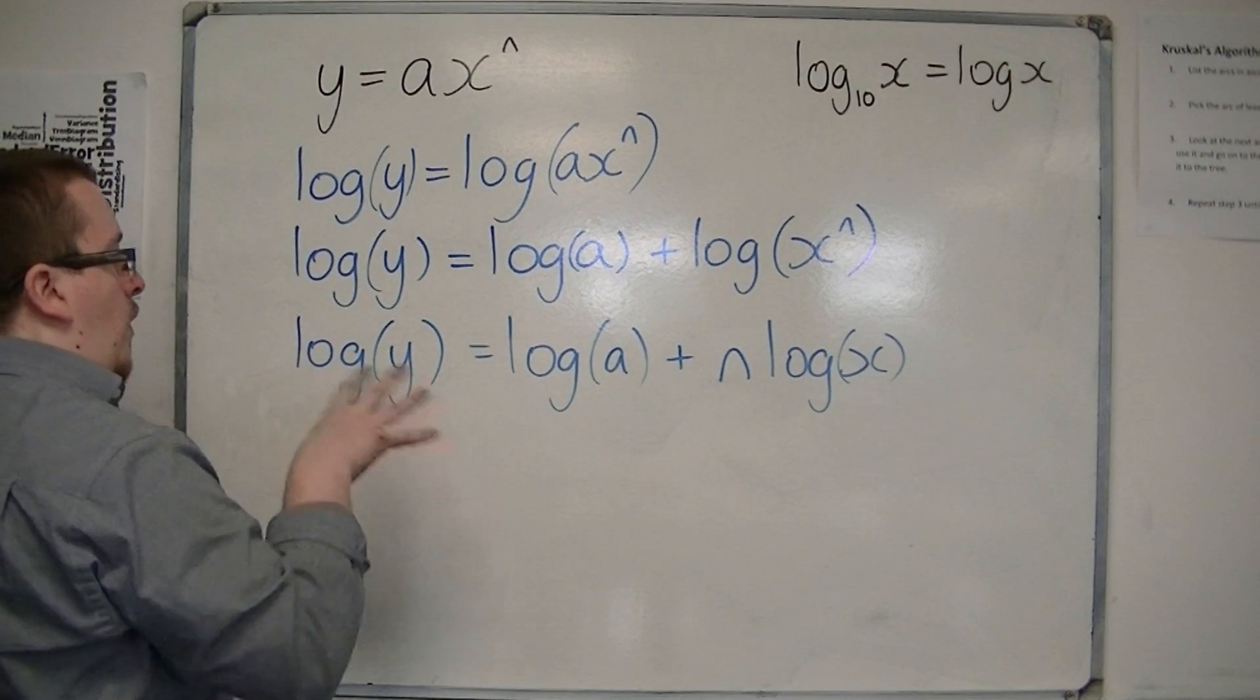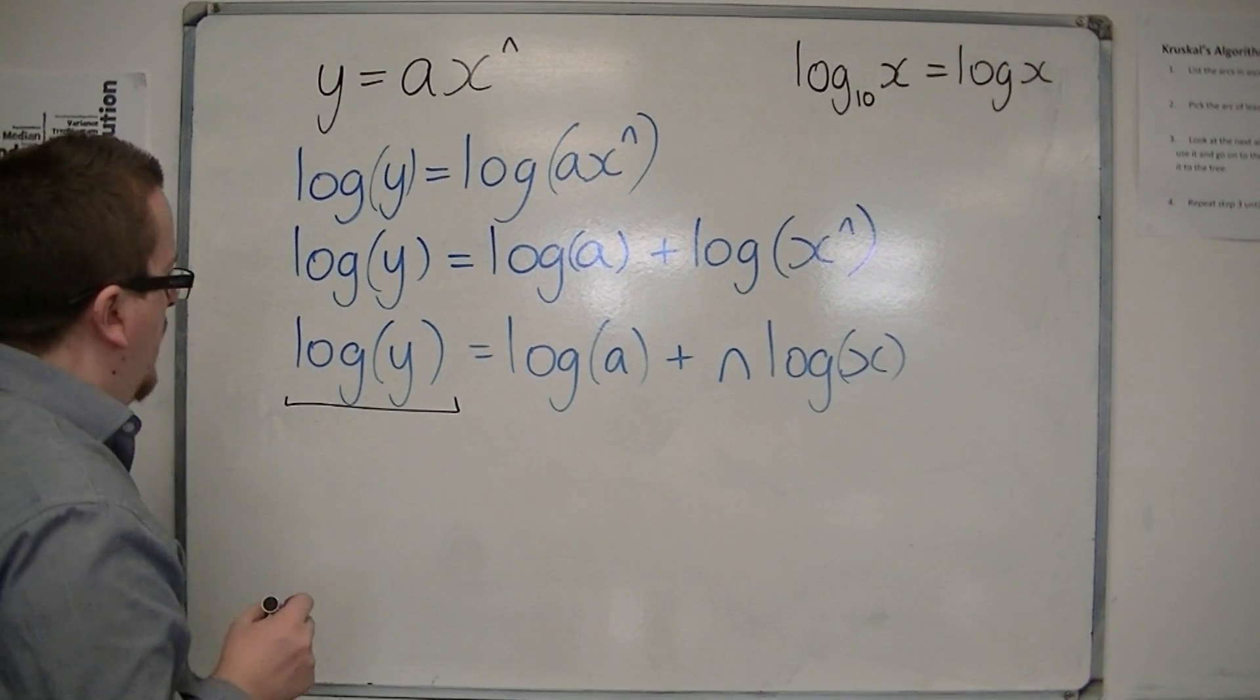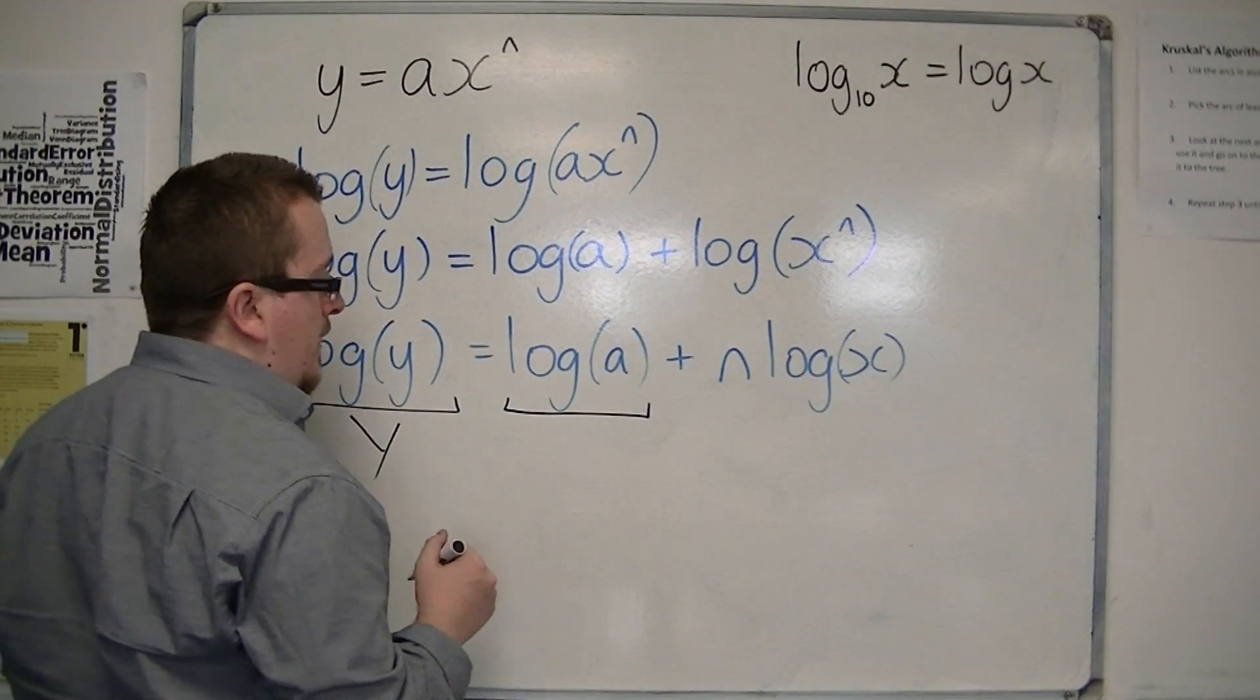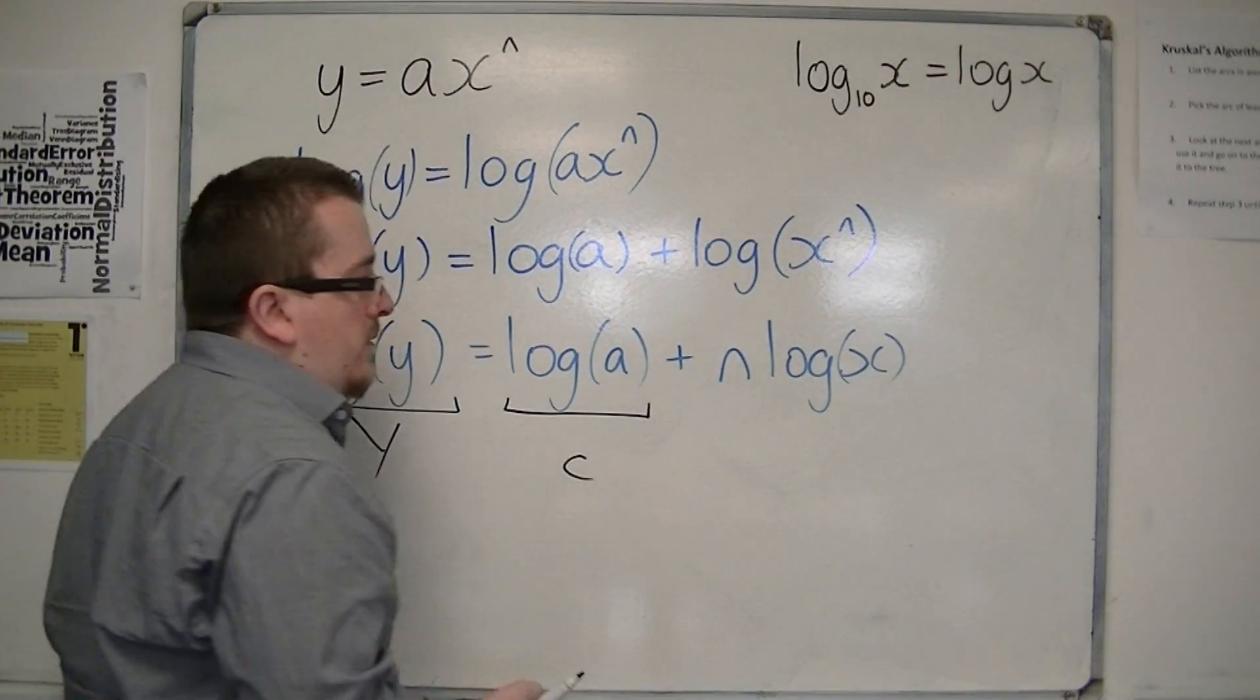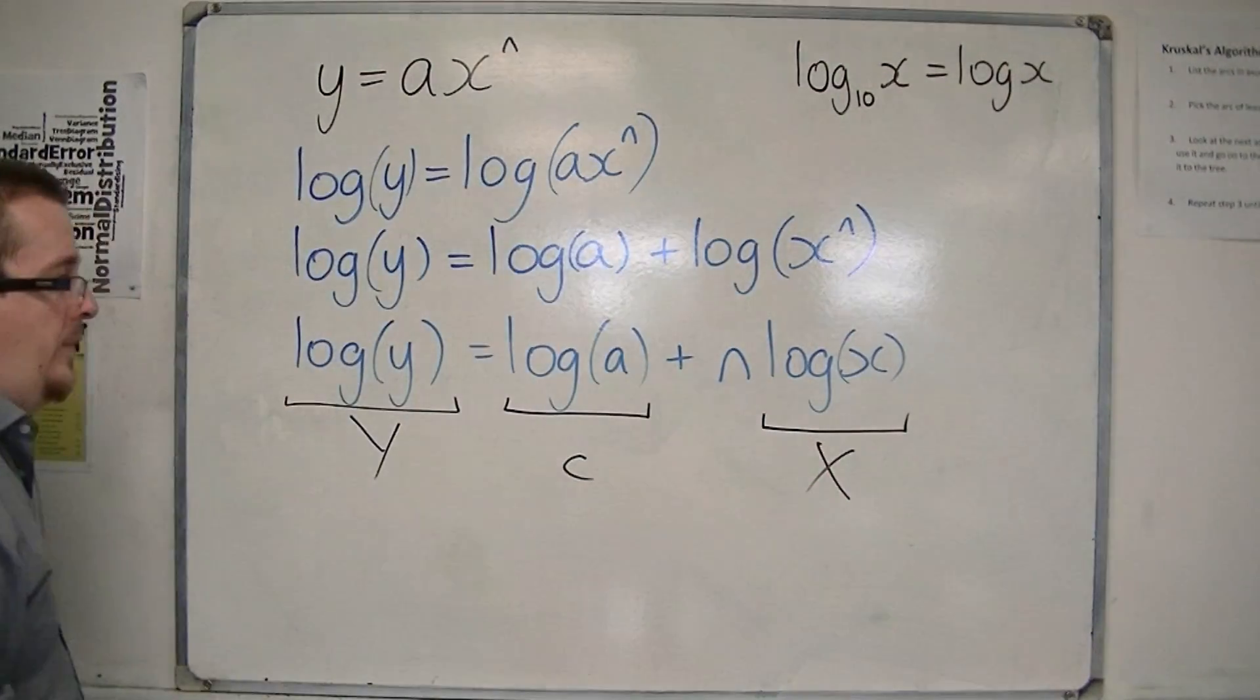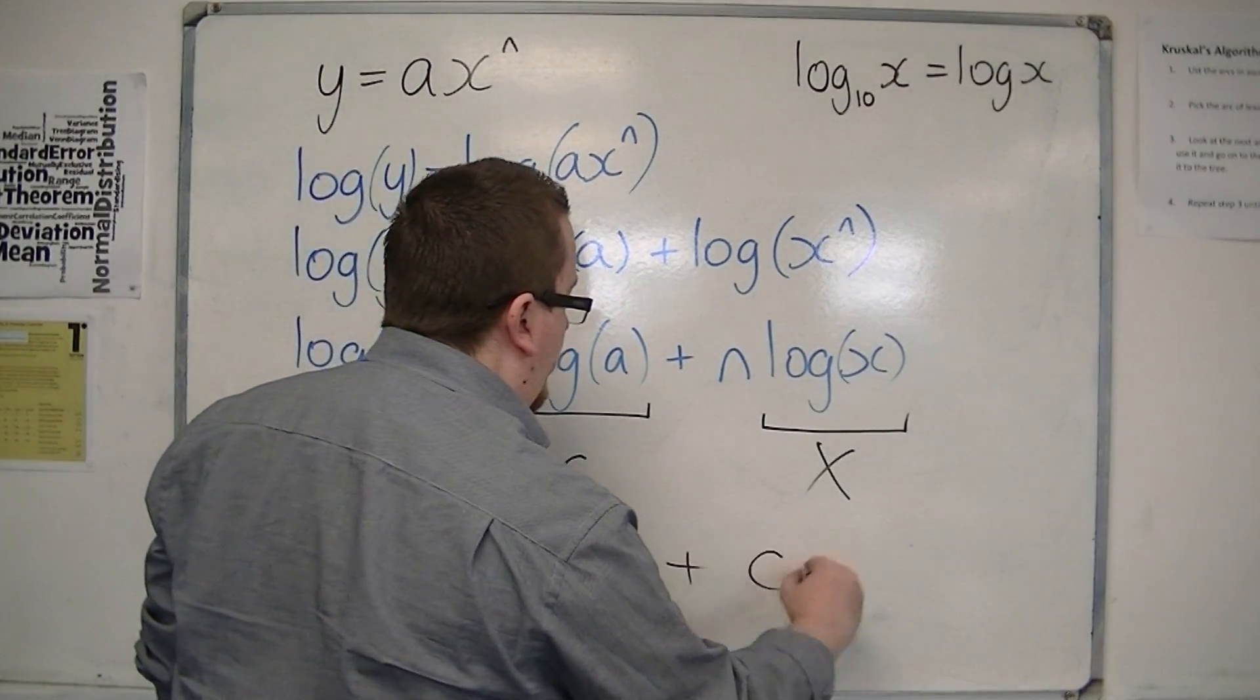So what we have here is that we have a variable y, so I could call that capital Y. I've got a constant log of a, which I could call c. I've got this n, I'll leave that alone, and the log x, which I can say is capital X. So I can then say this is the same as y is equal to nx plus c.